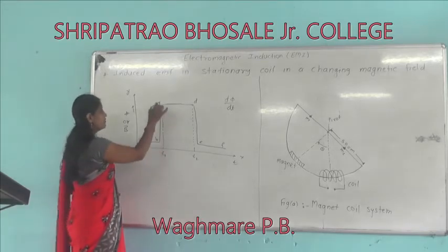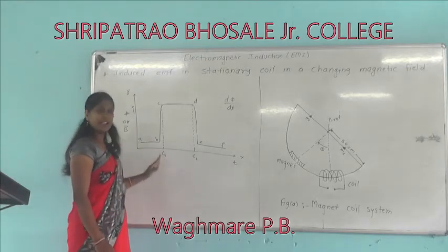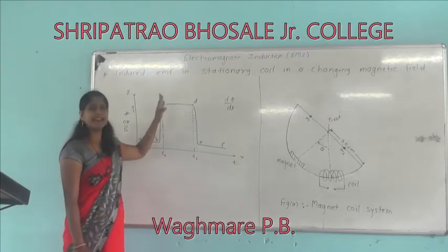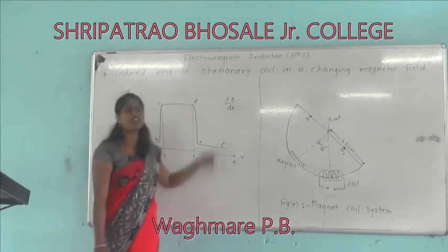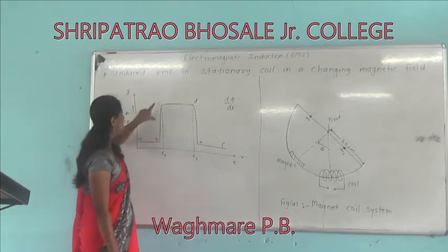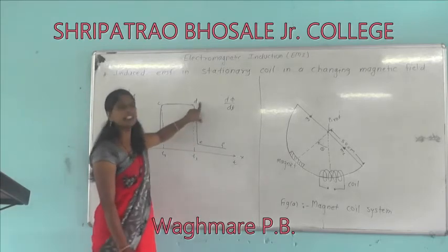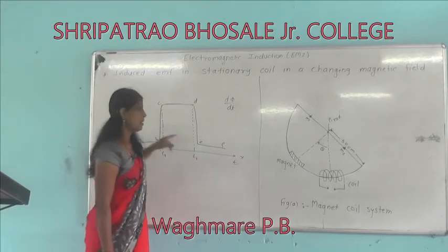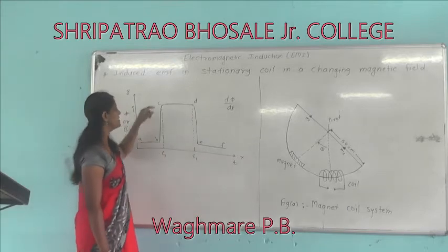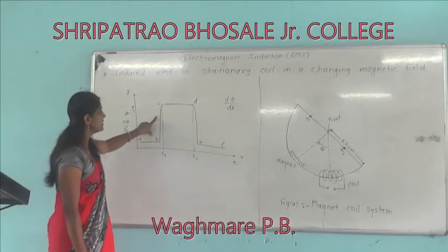In this graph, the magnetic flux increases rapidly in a very small time. In graph segment CD, the magnetic flux is constant, so the changing magnetic flux with respect to time will be zero. In the rapidly changing portions (BC and DE), the changing magnetic flux is maximum — the value of dΦ/dt will be maximum in these cases.